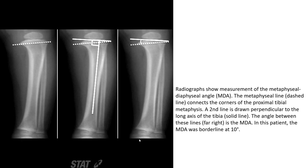Measurement of the metaphyseal-diaphyseal angle: the metaphyseal line (dashed line) connects the corners of the proximal tibial metaphysis. The second line is drawn perpendicular to the long axis of the tibia (solid line). The angle between these two lines, far right, is the metaphyseal-diaphyseal angle. In this patient, the angle was borderline at 10 degrees.